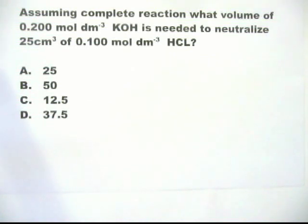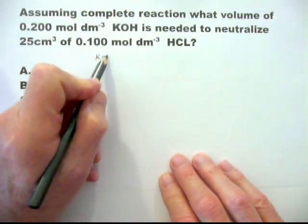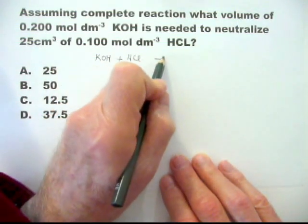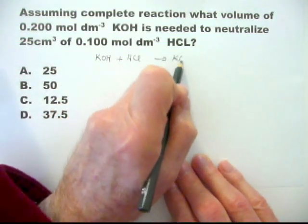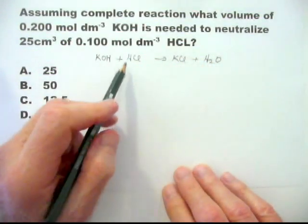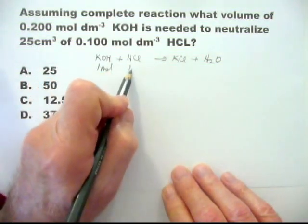Immediately you see this, you should realize that one mole of potassium hydroxide is needed to neutralize one mole of hydrochloric acid. I will write the equation down, but in the exam it should not be necessary. So it's KOH plus HCl goes to KCl plus H₂O, and it's one mole, one mole.